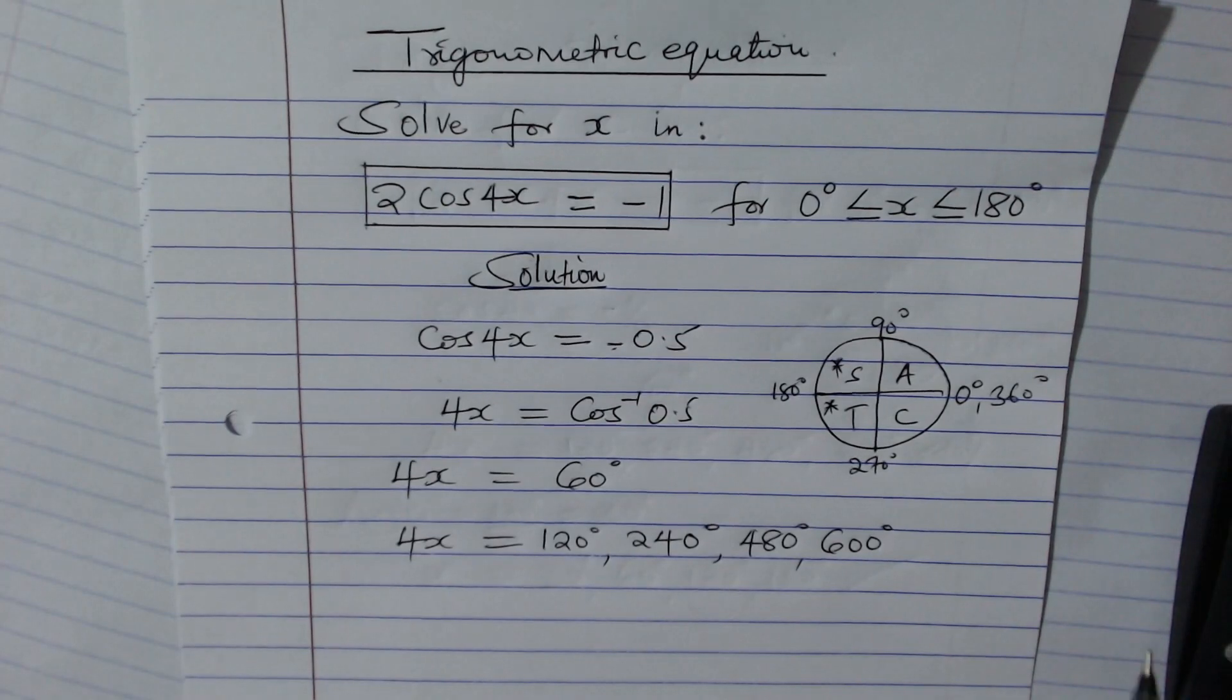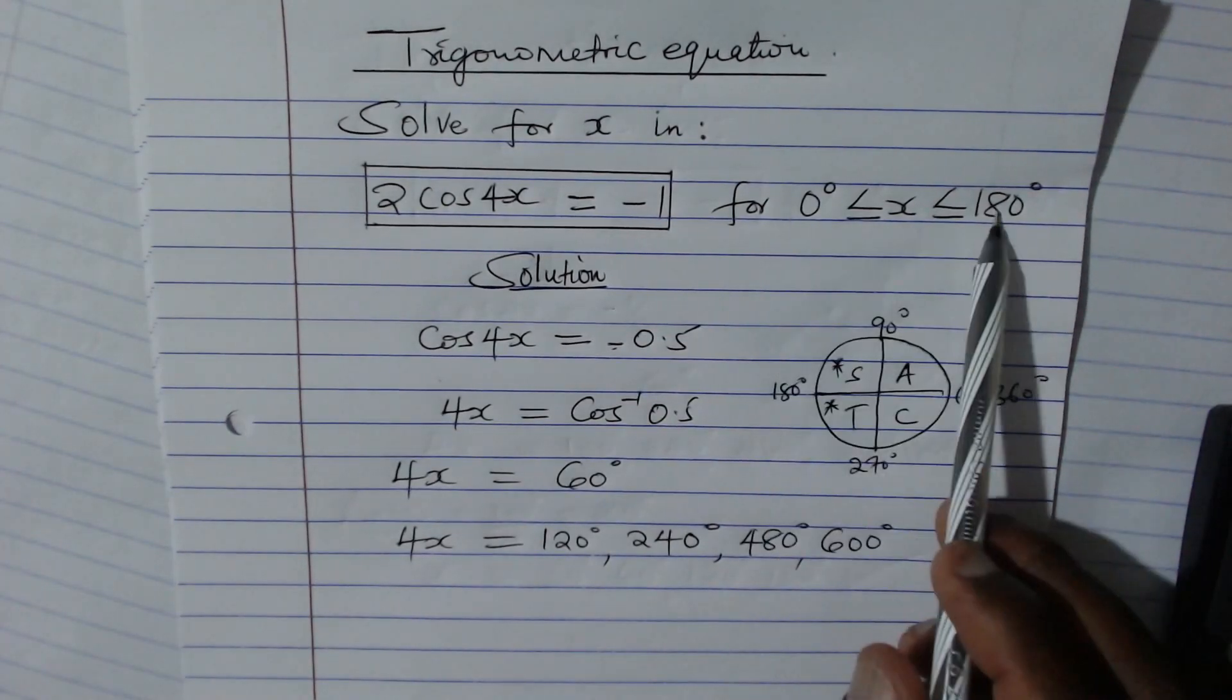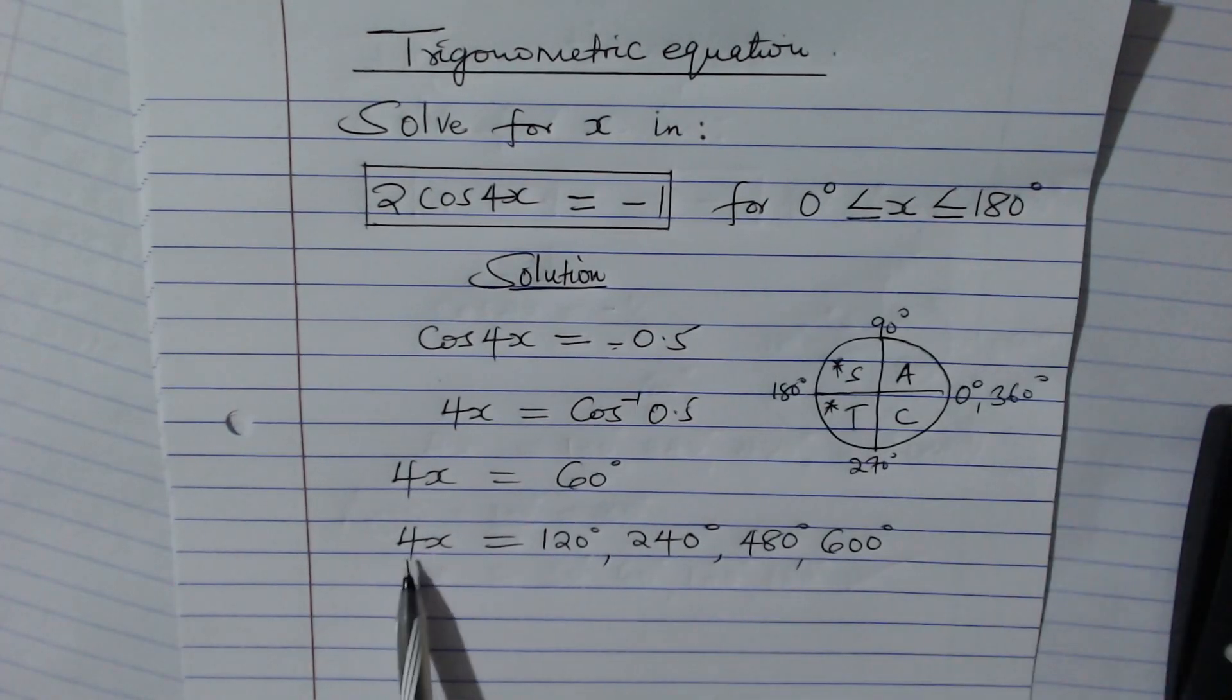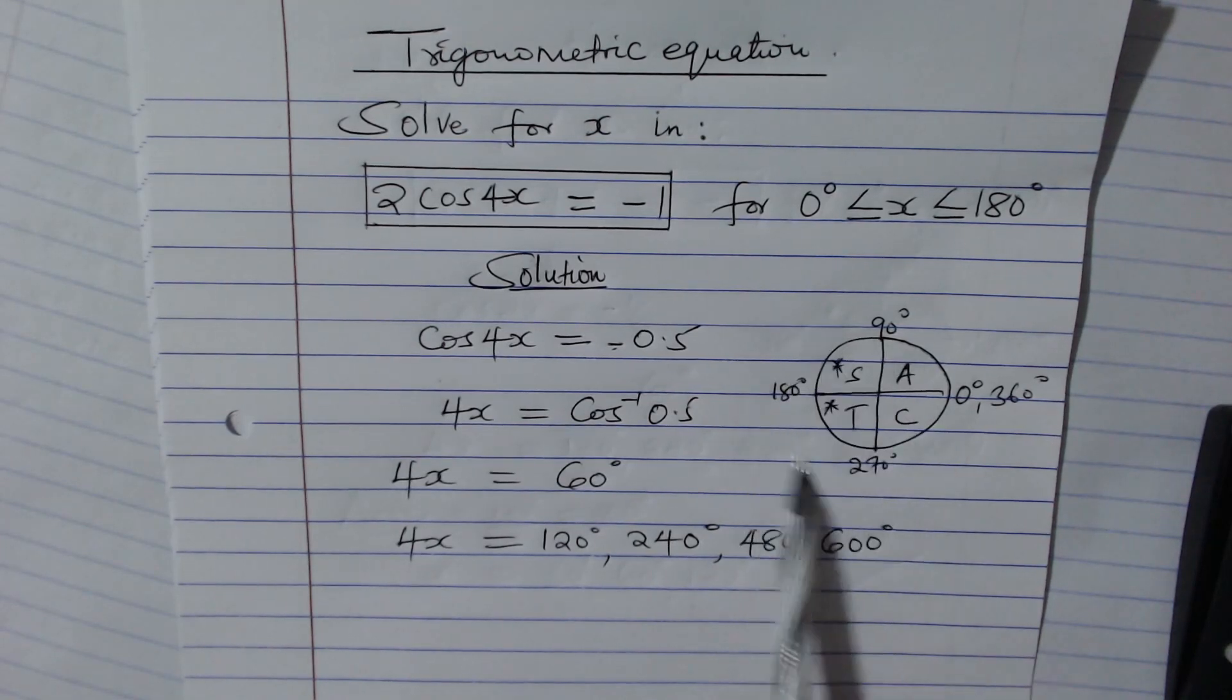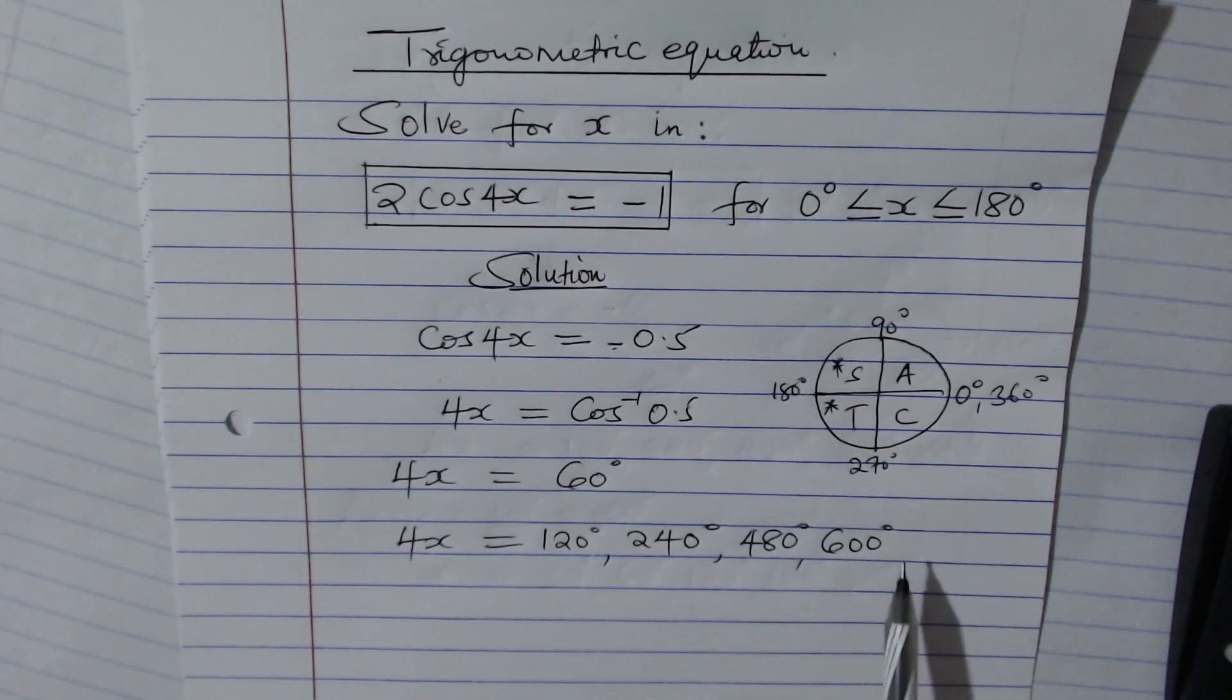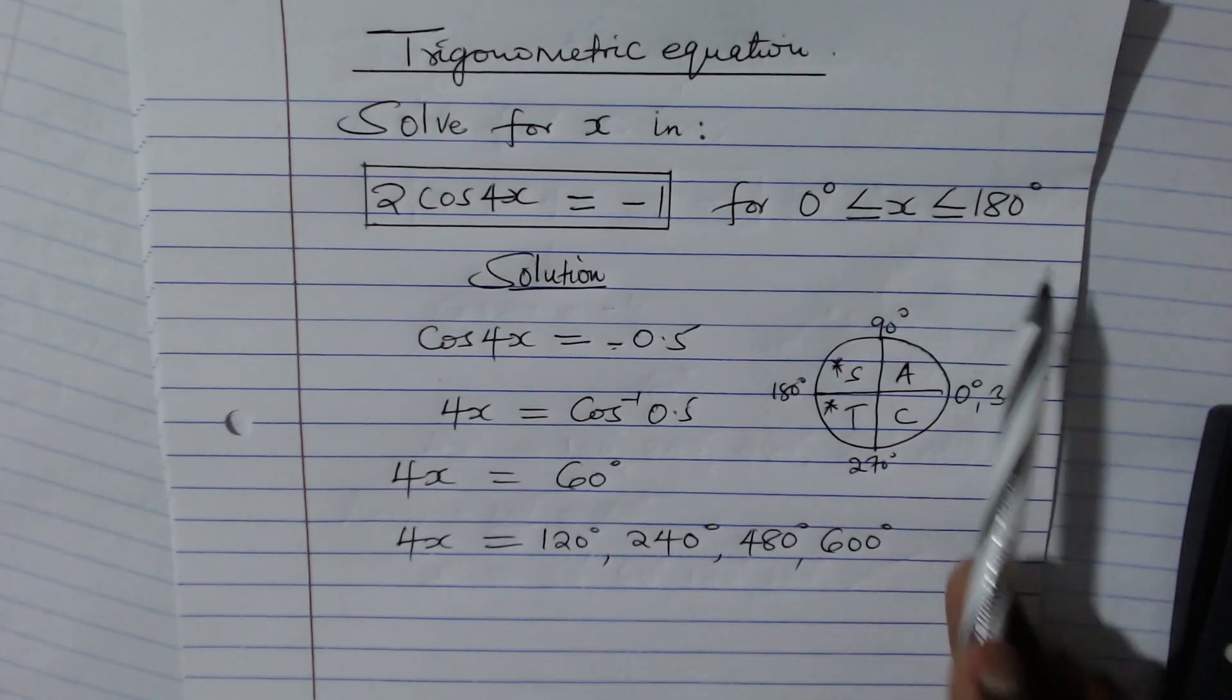Again, we need to test to see whether we're still in the range 0 to 180. You need to divide, as I've said, 4x, but to get x you need to divide all these by 4. So when I divide 600, because this is the largest, 600 ÷ 4, I'll get 150. Maybe I can test, maybe if I go another round, whether it will be more than 180 or less.